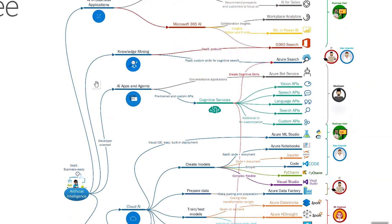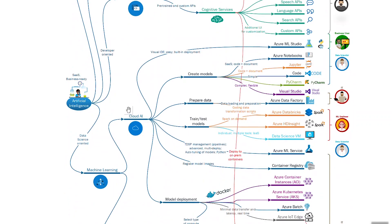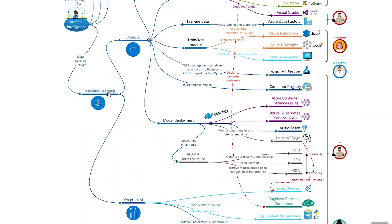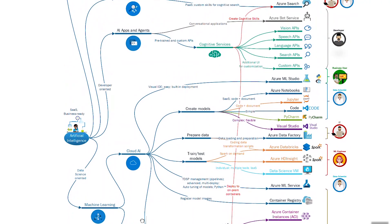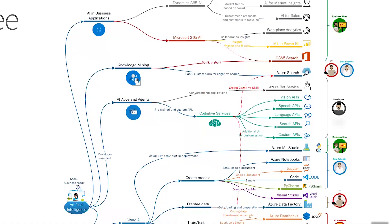Speaking about Azure AI as a platform as a service, first we have knowledge mining, second applications and agents, then cloud machine learning — which is divided into cloud AI and on-premises AI — and you can see there are a lot of different capabilities here. Let's first discuss knowledge mining.